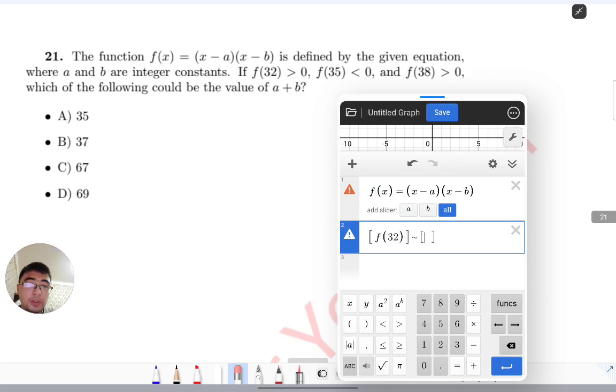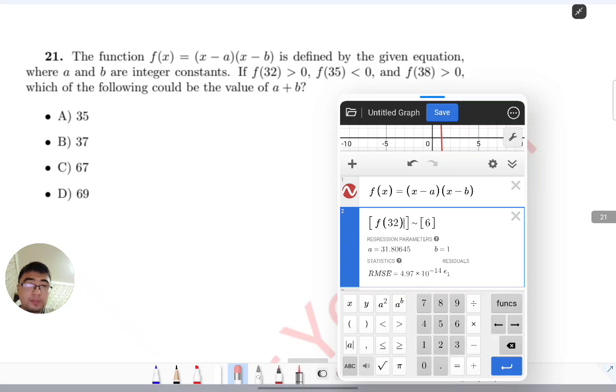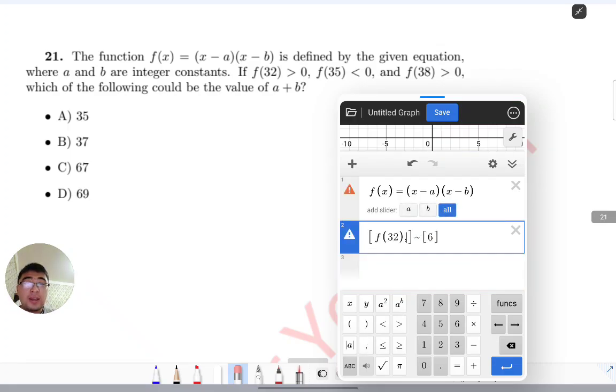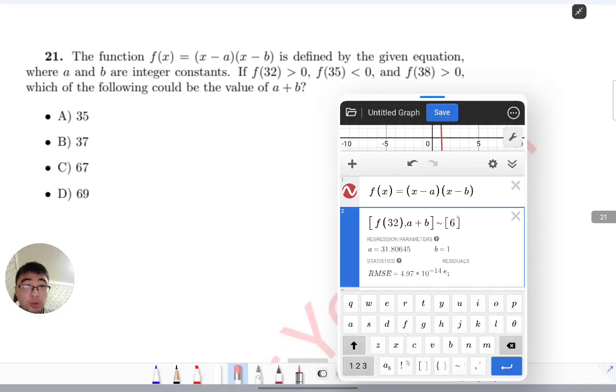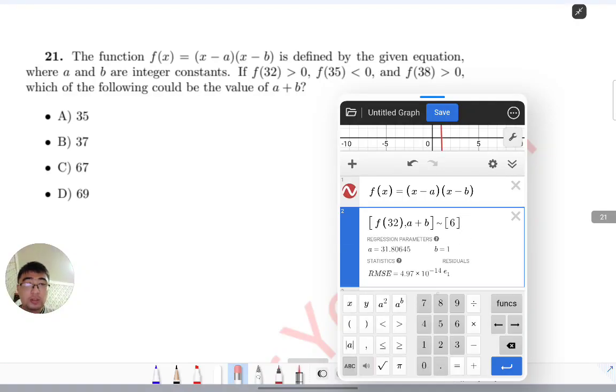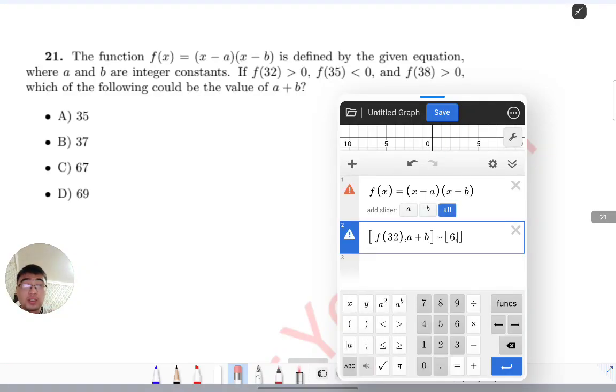And a plus b I will define as a second equation. I suppose that the options are correct, so option A is correct: 35. Then a plus b equals 35.